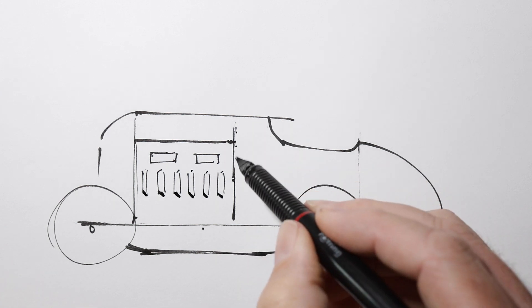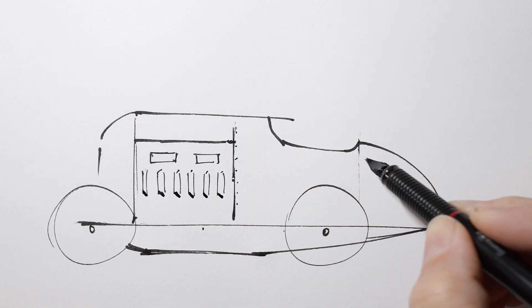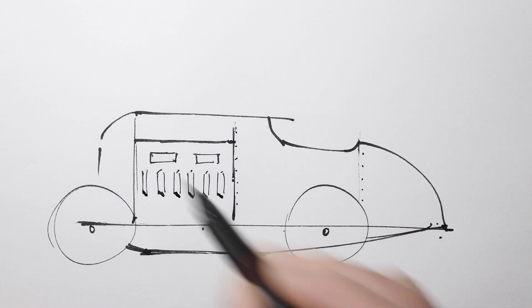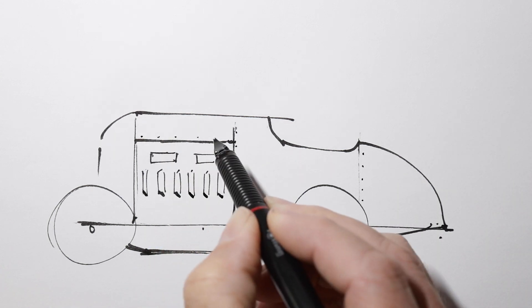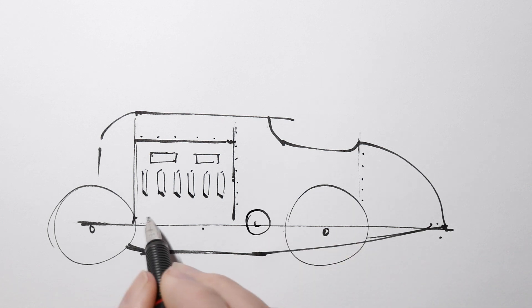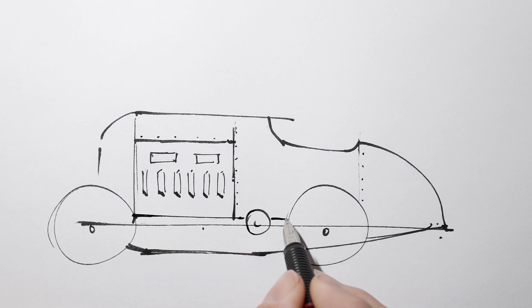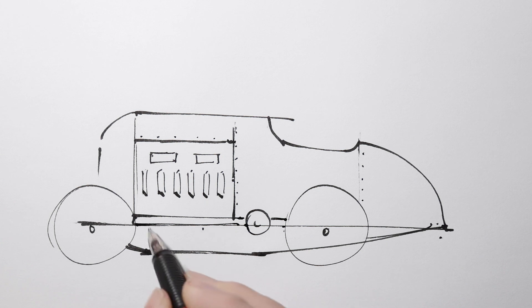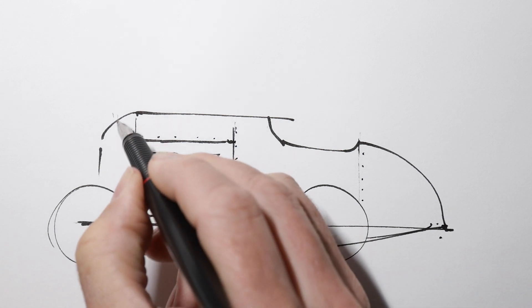And then we have rivets and the joins, and a chain drive. And the chassis should be two lines like that, it's a wide piece of metal. Maybe a join there, and a filler cap for the radiator.